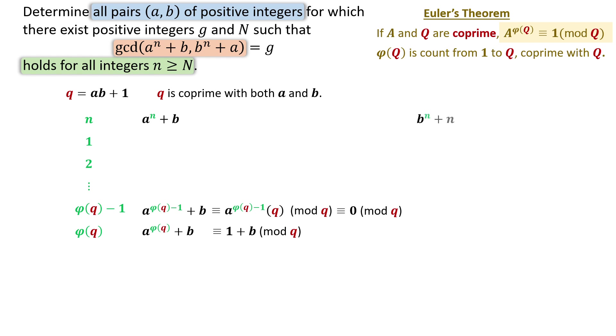By similar reasoning, we can conclude that b to the phi q minus 1 plus a is divisible by q. Thus, the gcd of the two expressions is a b plus 1.